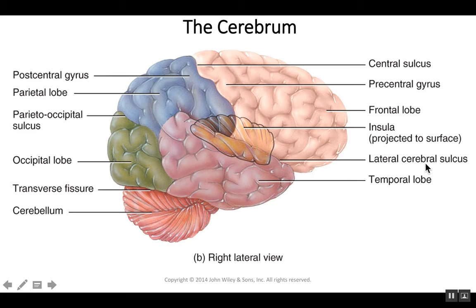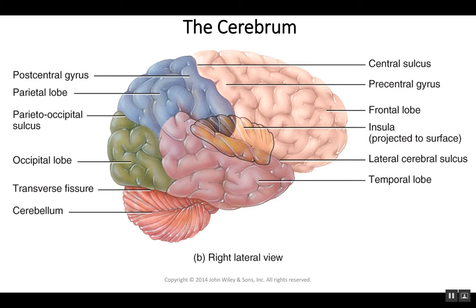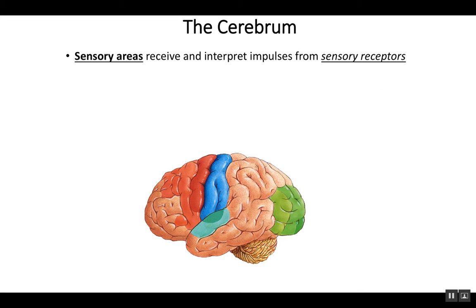There's also a groove that separates the temporal lobe, known as the lateral cerebral sulcus. There's also a deep fissure that separates out the cerebellum, known as the transverse fissure. There's yet another fissure you can't see, but the fissure that separates the two hemispheres is known as the longitudinal fissure, which runs right down the midline of the brain. More important than knowing the surface anatomy is to be able to identify functional areas.